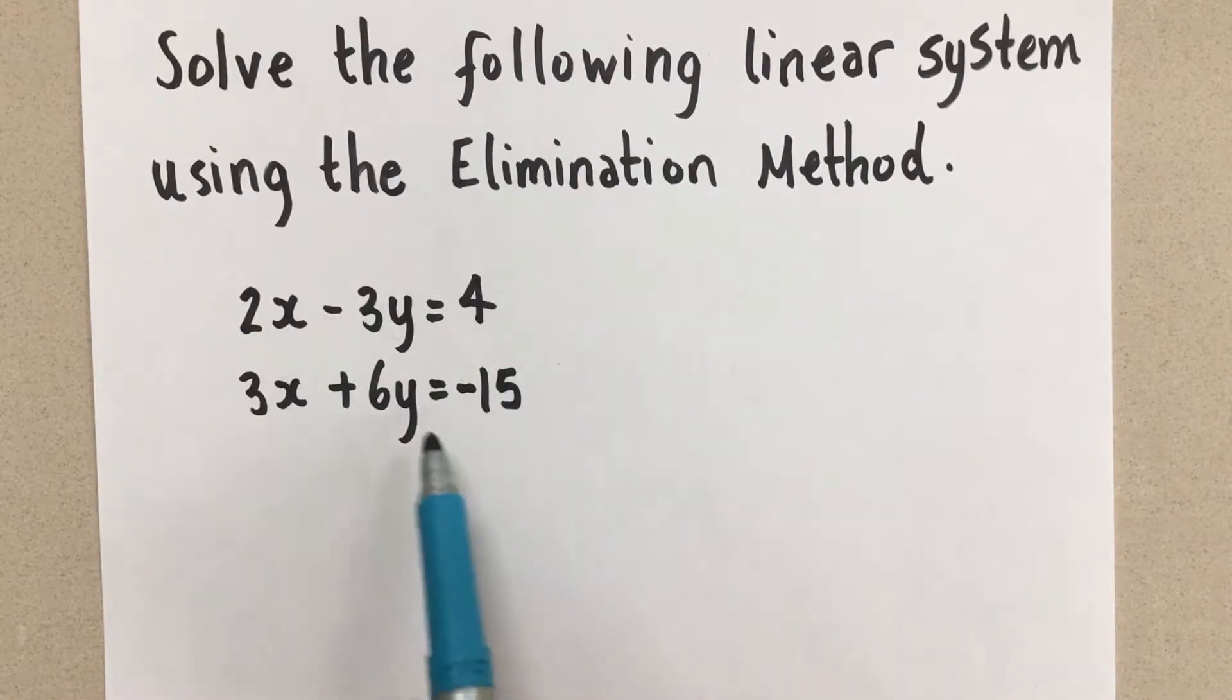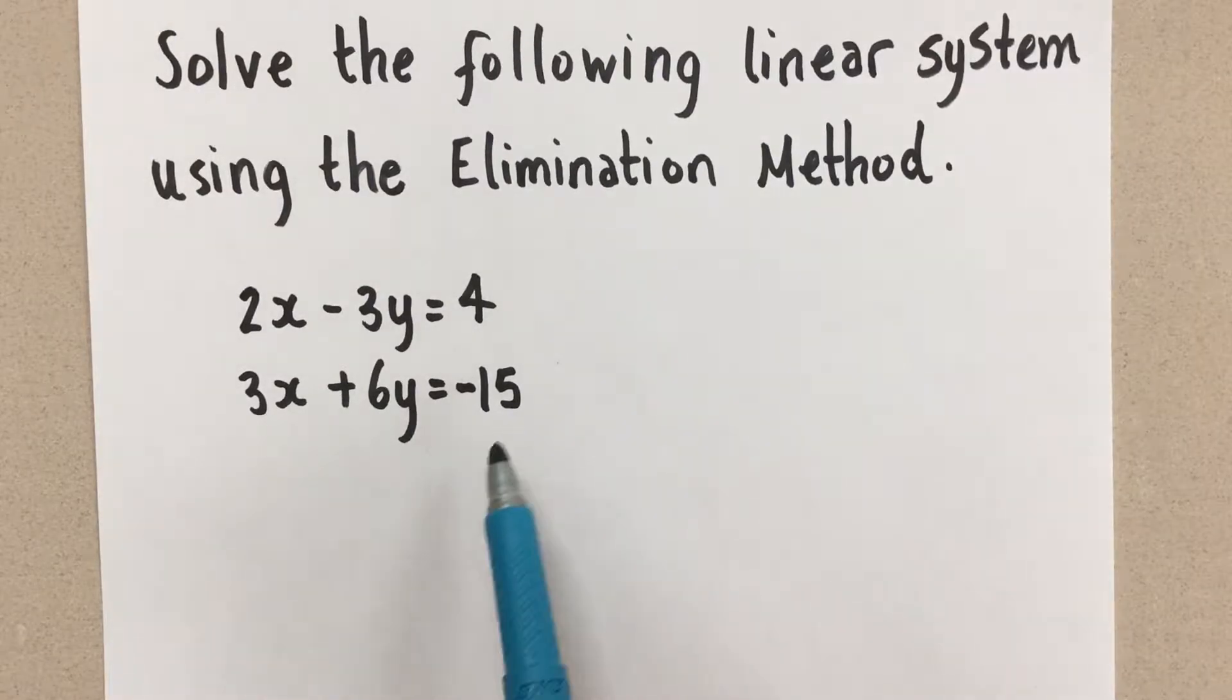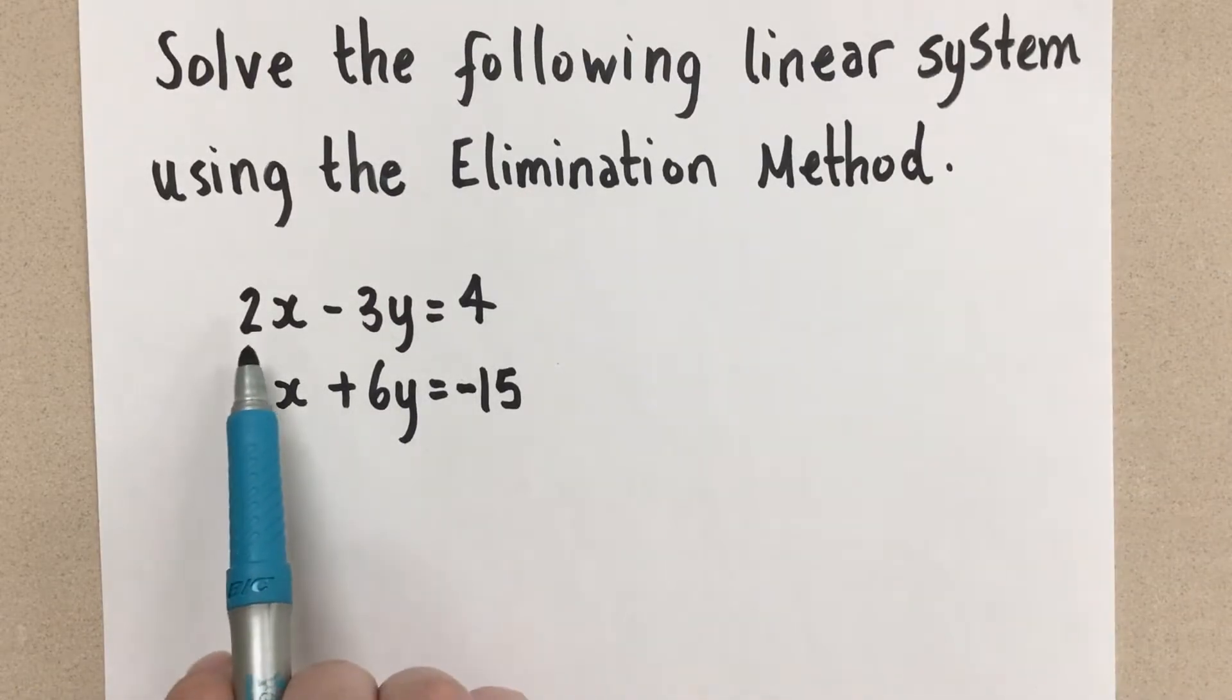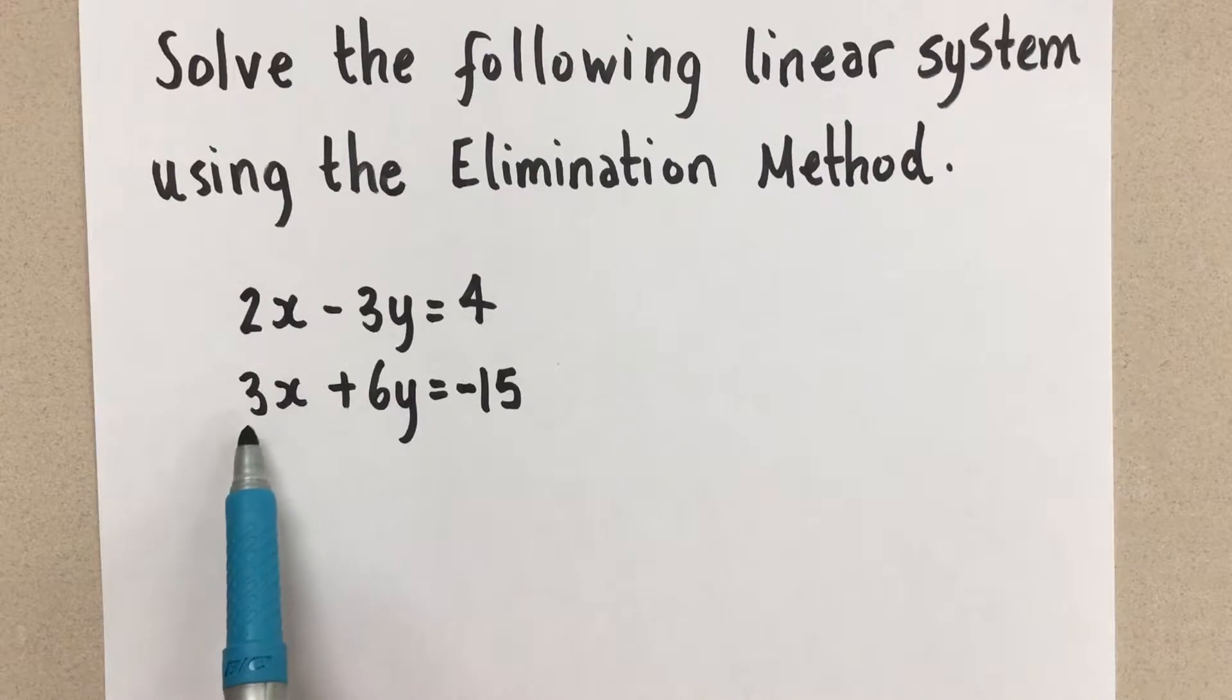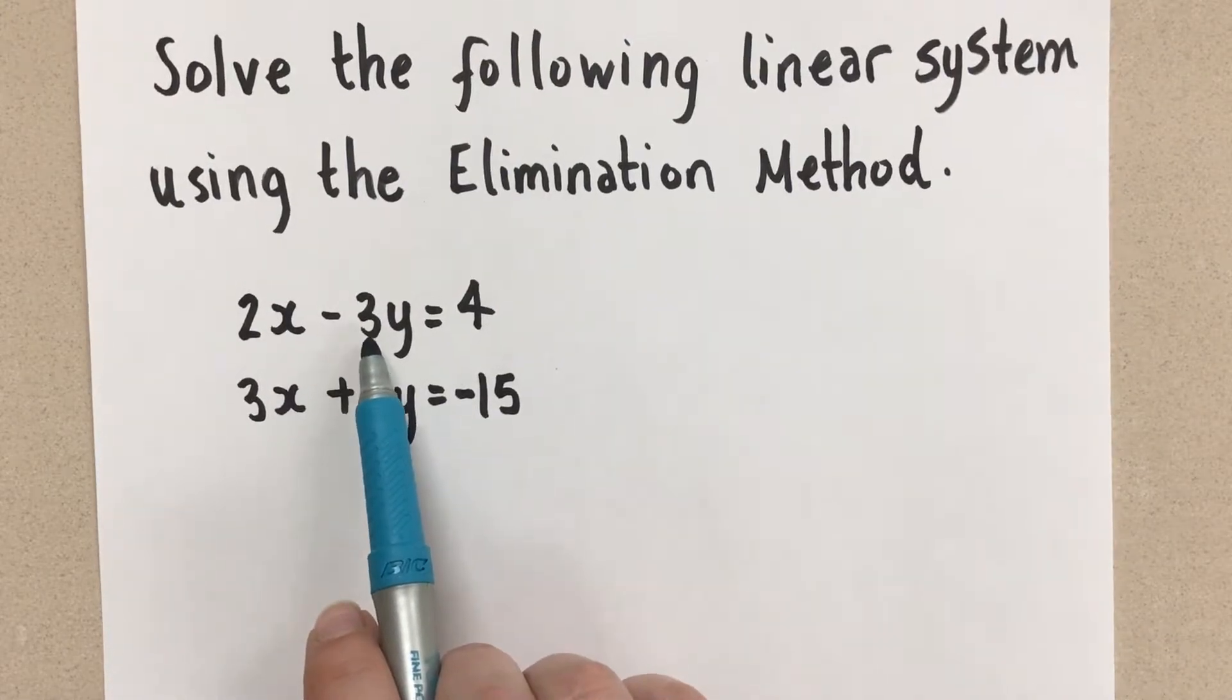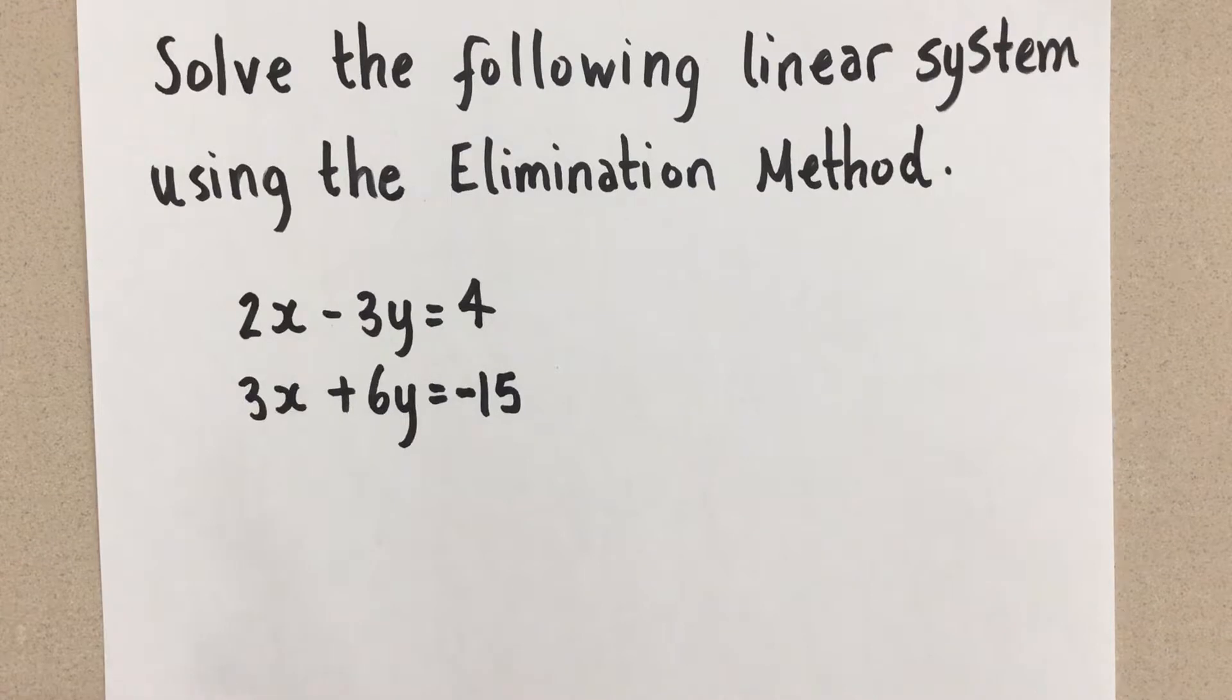These constants could also be on the left side of the equation with zero on the right hand side and that would serve the same purpose here. So when we compare the coefficients of the like terms, the x here has a 2 and the x here has a 3. And then the coefficient of the y has a negative 3 and the other y has a positive 6. So neither of the terms have the same coefficient.